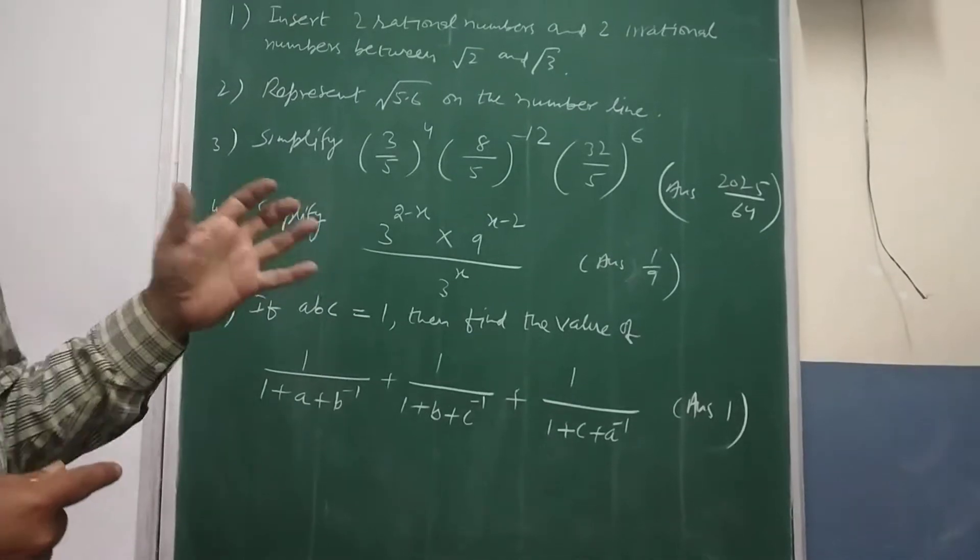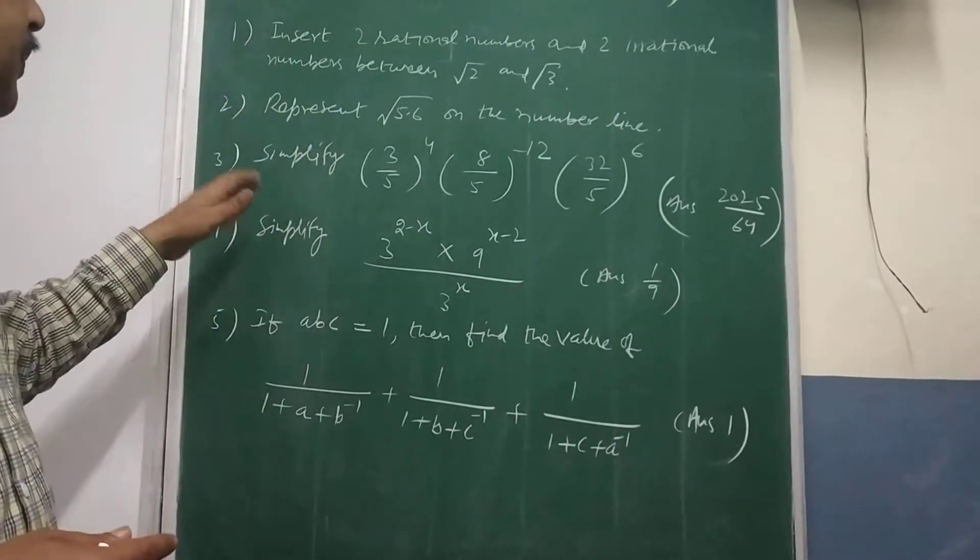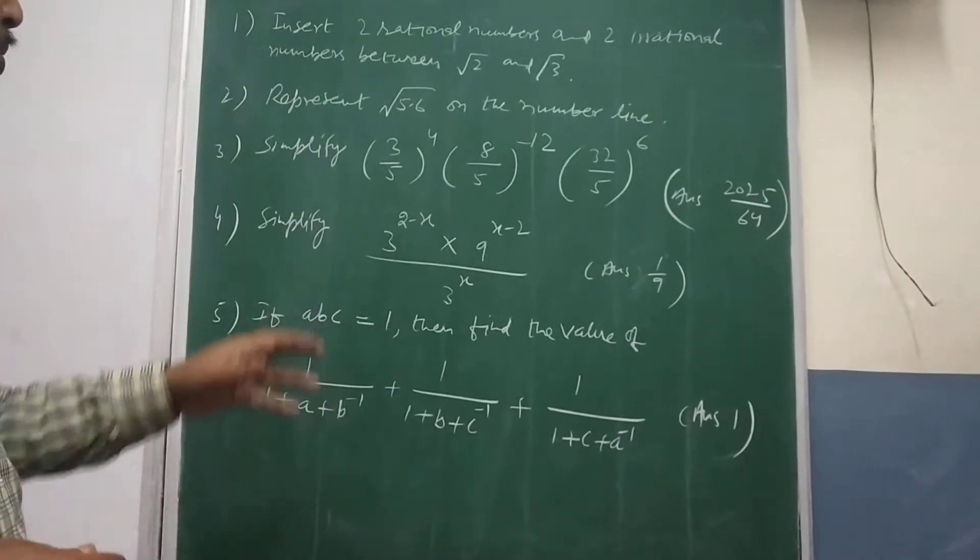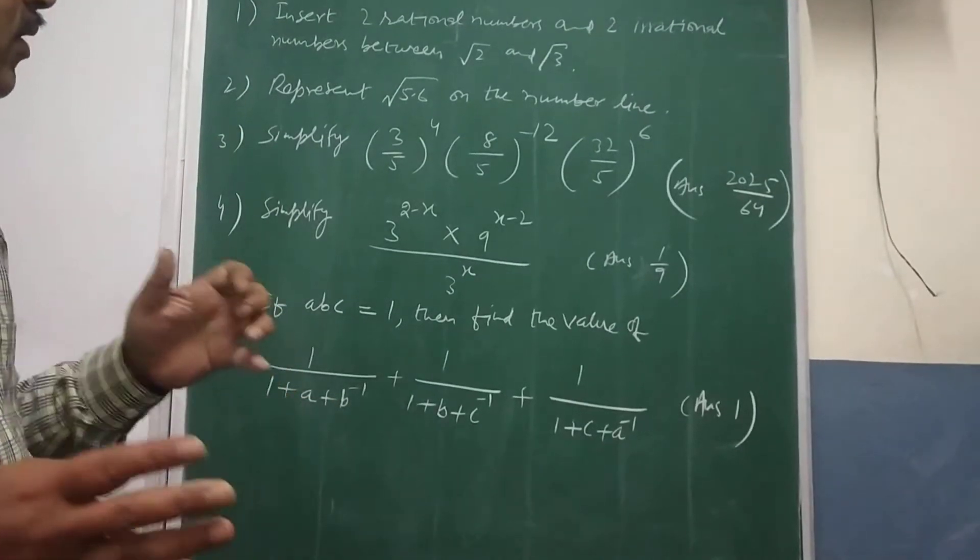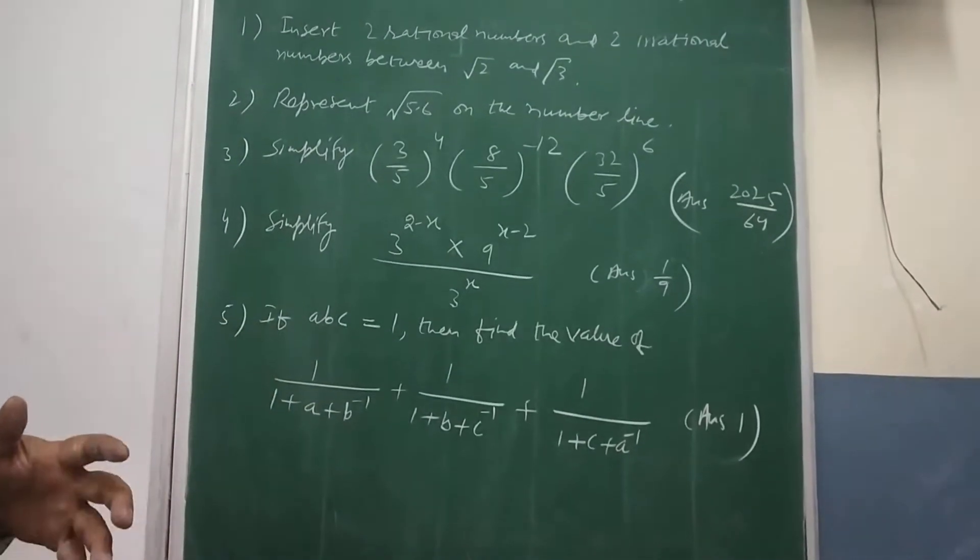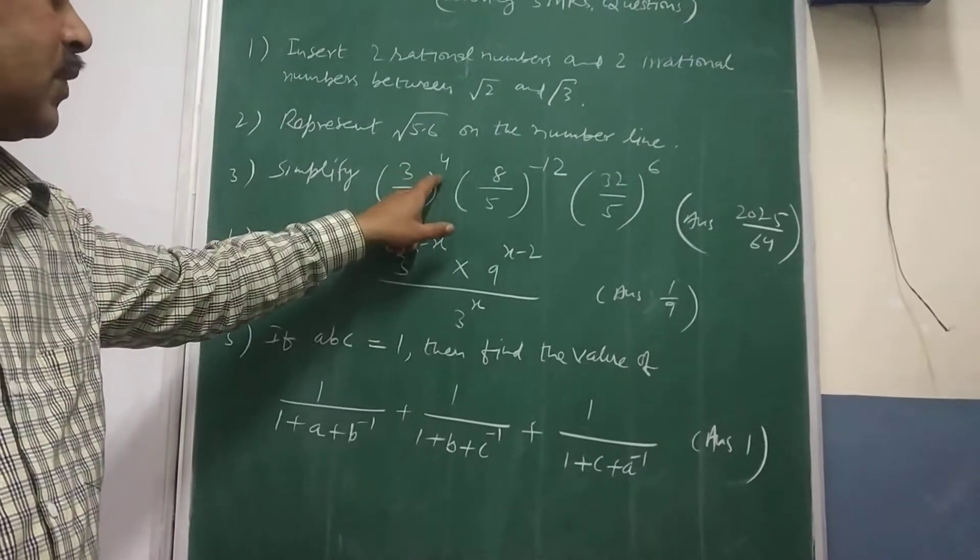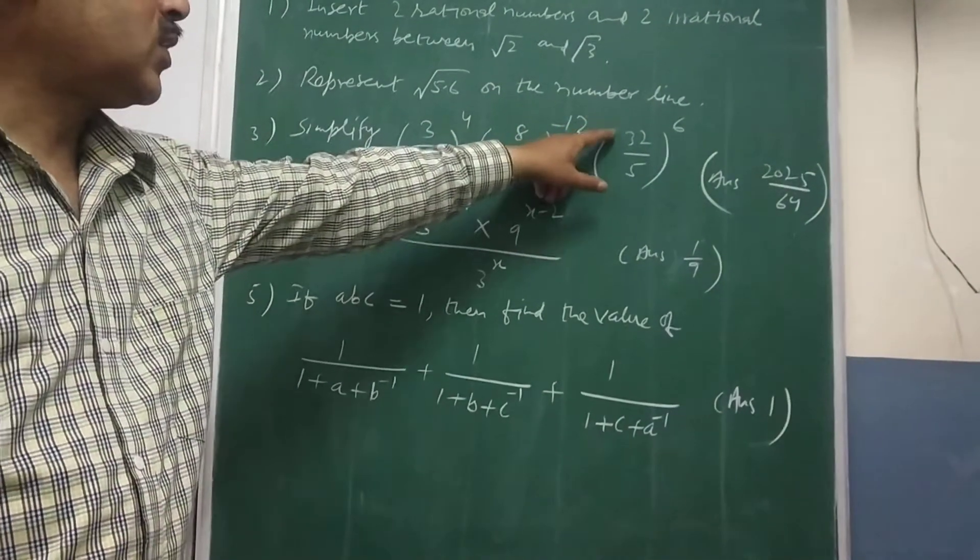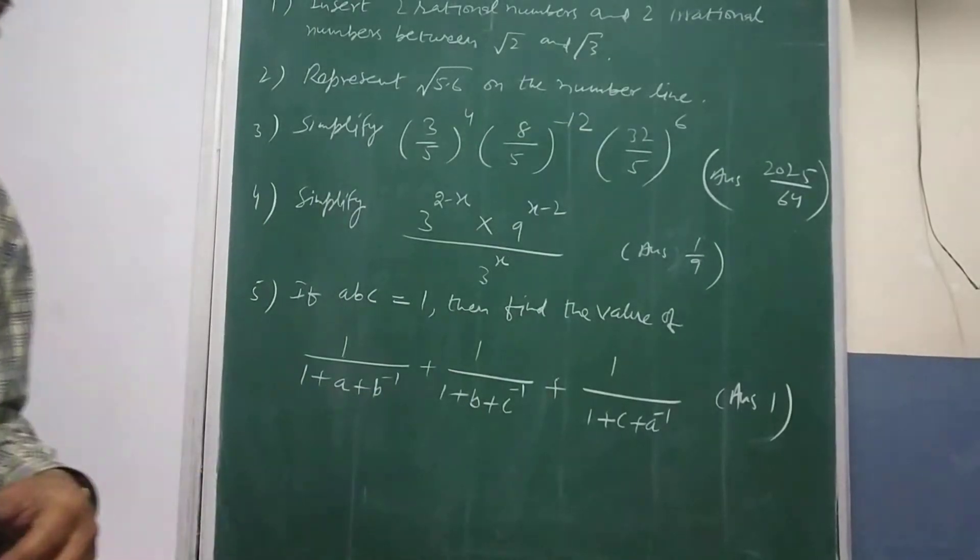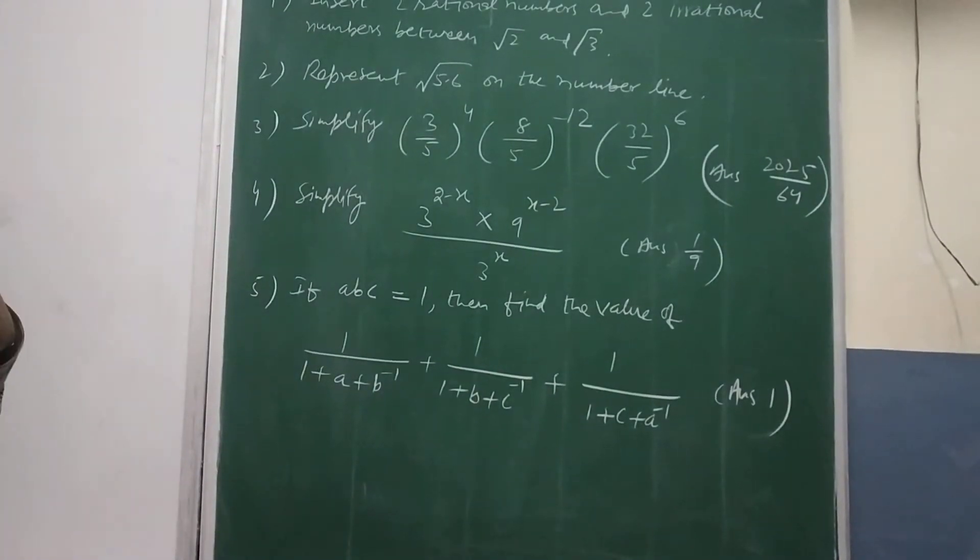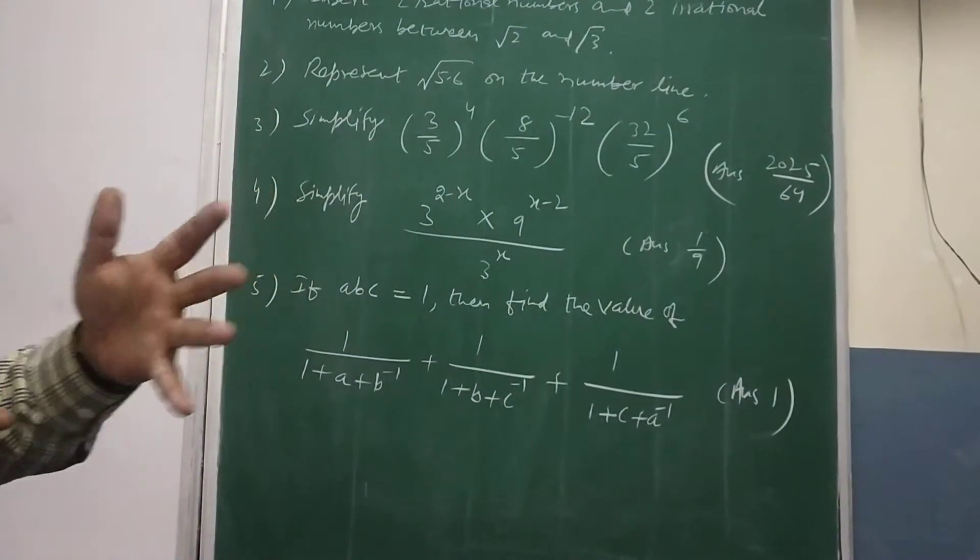So please follow that. Then exponent somewhere is also the part of the three marks questions I have added from the exponents chapter point of view. So this is (3/5)^4 (8/5)^-12 (32/5)^6. So you have to apply the laws of exponents. 5 laws are there.